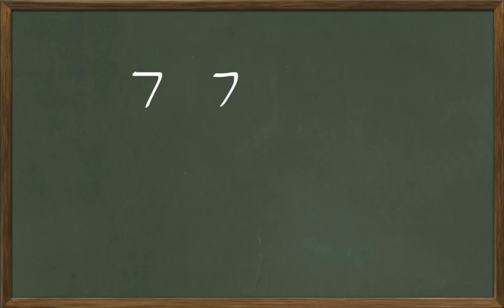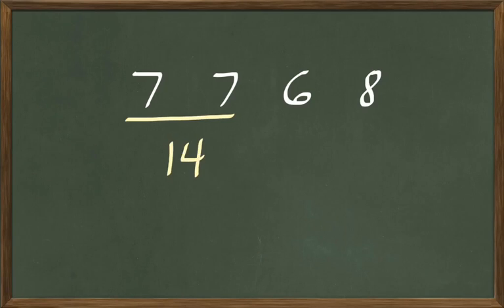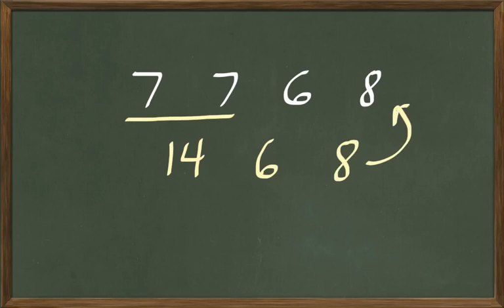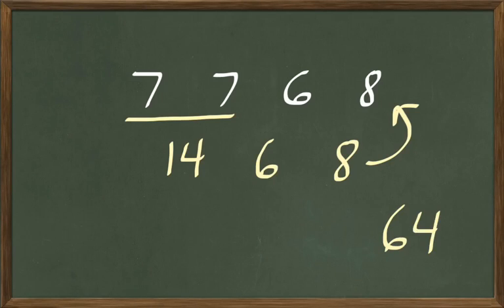Let's do 7 and 7 less 6 multiplied by 8. 7 and 7 are 14. And 14 less 6 are 8. How many are 8 multiplied 8 times? Think back to your 8's for your multiplication table. 8 times 8 are 64. So 7 and 7 less 6 multiplied by 8 are 64.